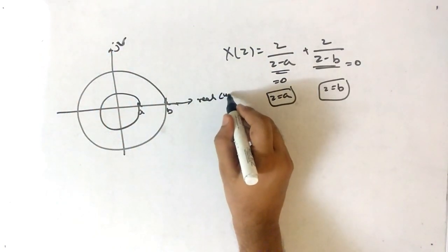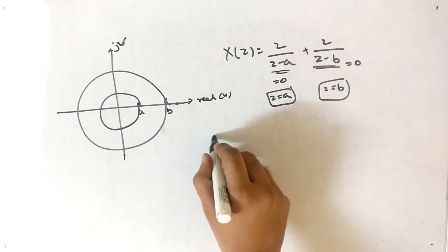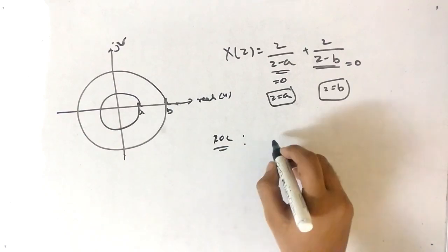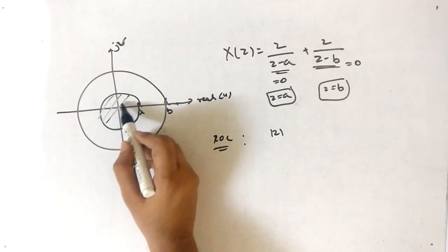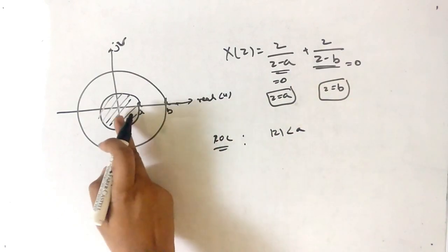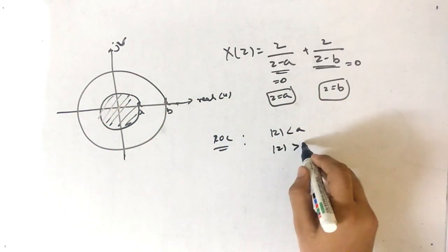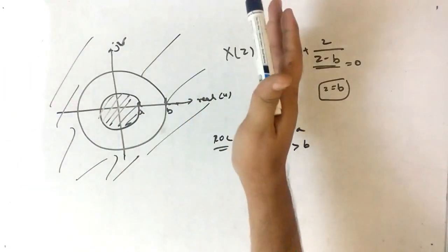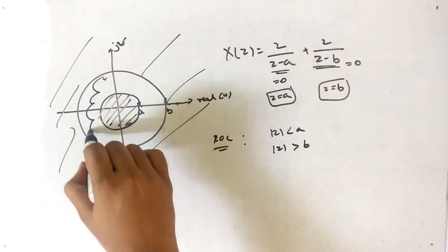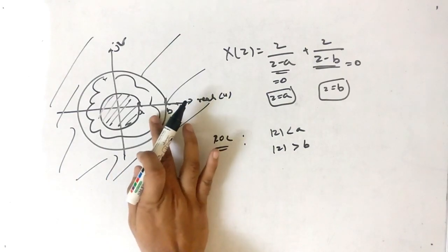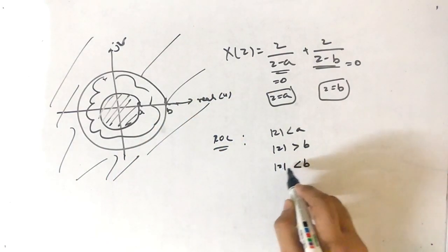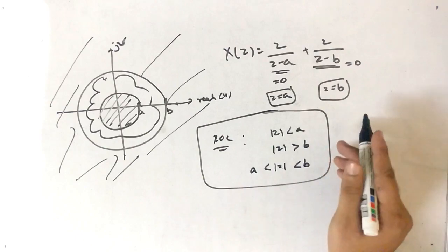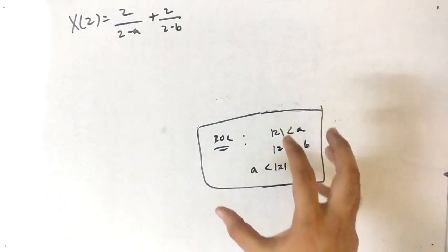When talking about region of convergence, we need to cover the whole graph. The area where |z| < a covers the inner region. |z| > b covers the outer region. The remaining annular region satisfies a < |z| < b. These are the three possible ROCs.